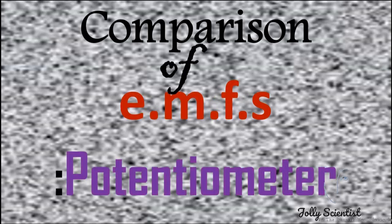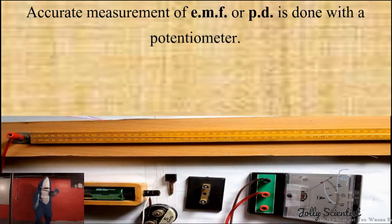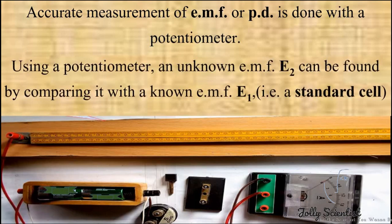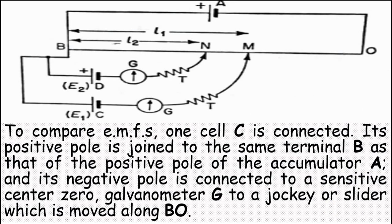Comparison of EMFs using a potentiometer: accurate measurement of EMF or potential difference is done with a potentiometer. An unknown EMF E2 can be found by comparing it with a known EMF E1. The setup consists of a resistance wire BO of one meter long with an accumulator A connected to it to maintain a constant current.